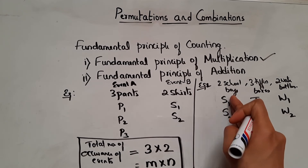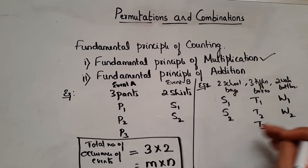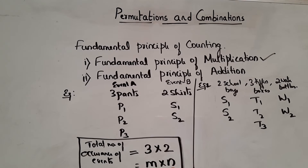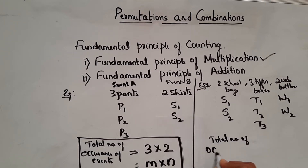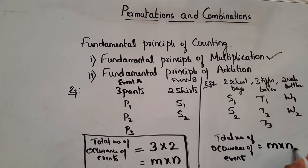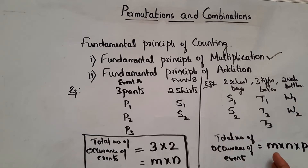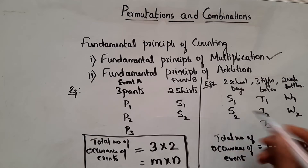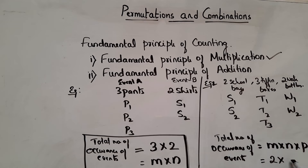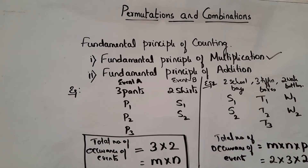If I take this as event A, event B, and event C, then the total number of occurrences of the events is given by M cross N cross P. If event C is occurring in P different ways, then the total is M cross N cross P. So M is 2, N is 3, P is 2. So 2 into 3 is 6, 6 into 2 is 12. So there are 12 possible ways she can carry these items. So this is what is fundamental principle of multiplication.